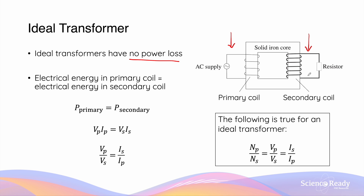Using the equation for electrical power, we can equate the voltage and current of the primary coil with the voltage and current of the secondary coil. This gives us another ratio for an ideal transformer, where the voltage of the primary coil divided by the voltage of the secondary coil equals the current of the secondary coil divided by the current of the primary coil.